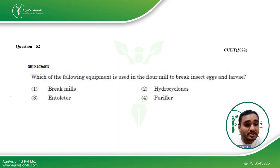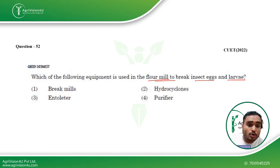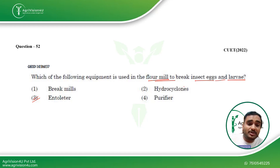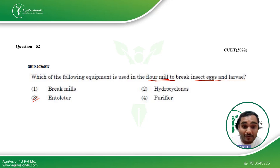Coming to the next question: which of the following equipment is used in the flour mill to break insect eggs and larvae? This question is from food plant equipment, which is associated with food engineering. The entolator is the machine used for breaking the larvae and insect eggs, and it is very commonly used. You won't find it asked very often in exams, but you can always expect some random questions like this that many people are not aware of.